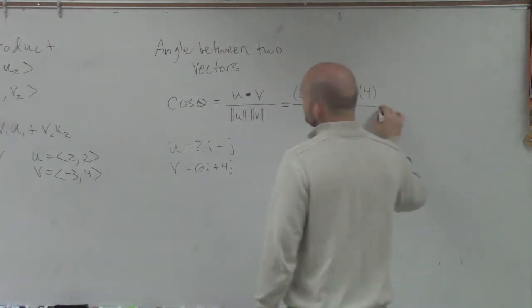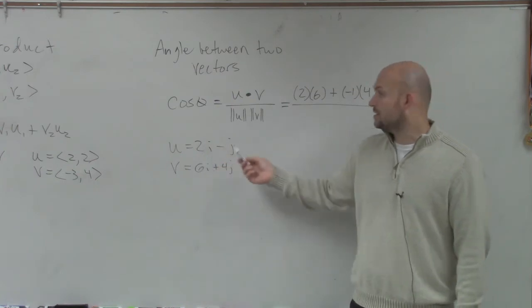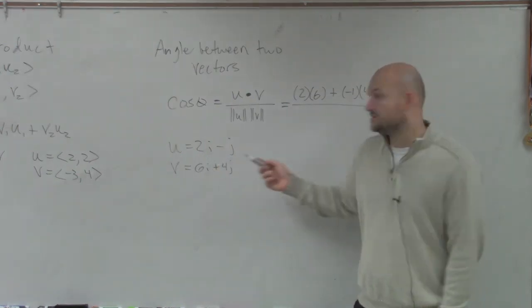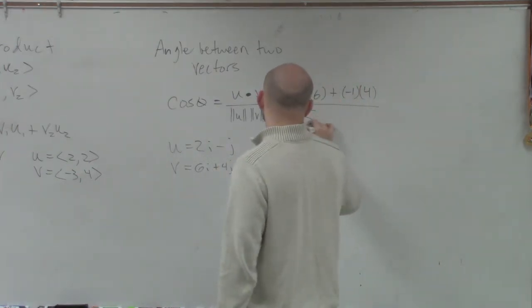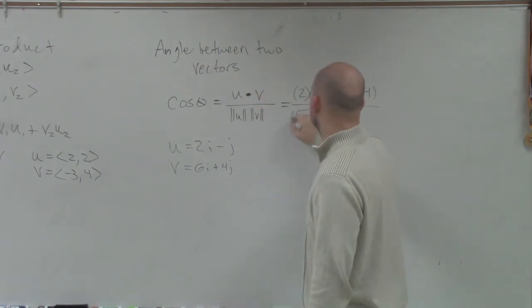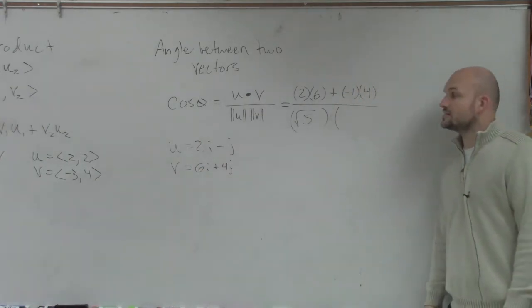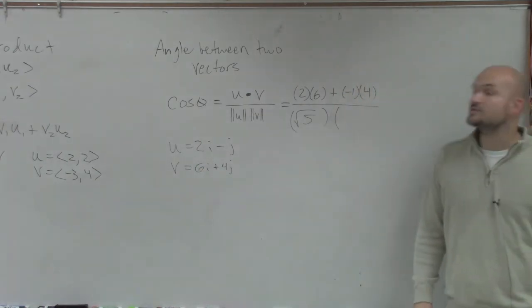Then divide it by the magnitude of u. Remember, the magnitude of u is 2 squared, which is 4, plus negative 1 squared, which is 1. So that would be square root of 5, times the magnitude of v, which is 6 squared, which is 36, plus 4 squared, which is 16. So that's going to be 52.